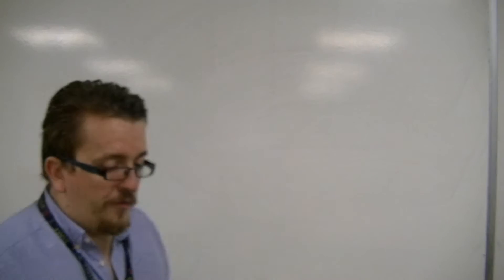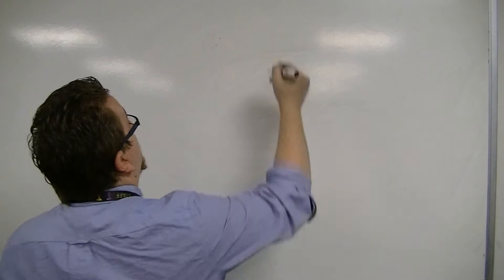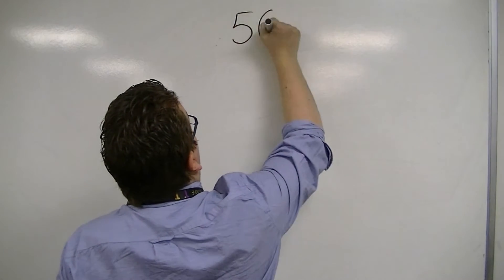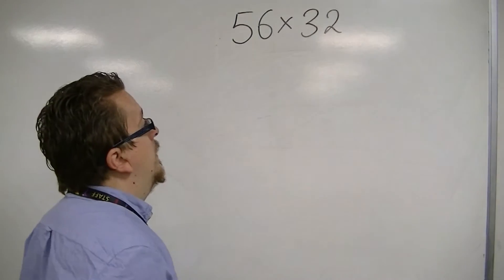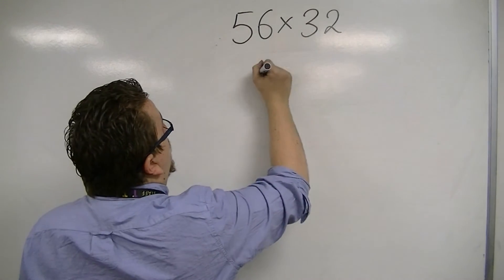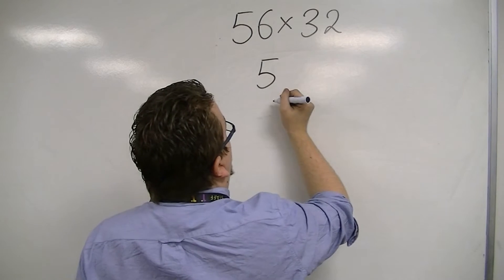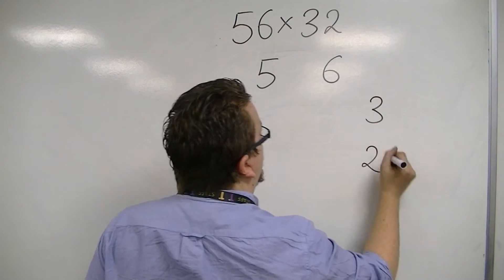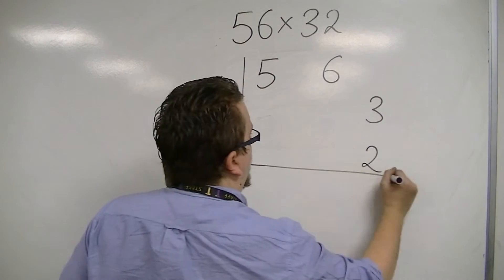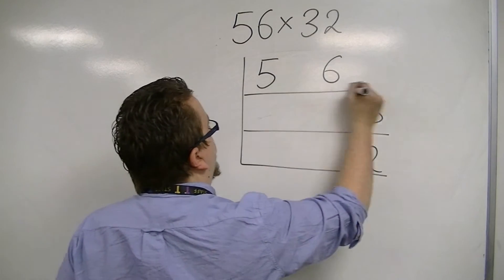So, we're going to start off with something like 56 times 32. We set it out with the tens, units, or both of them, tens, units. The grid looks like this.